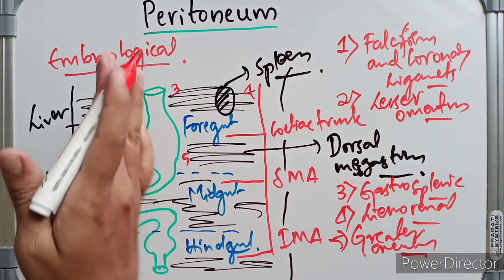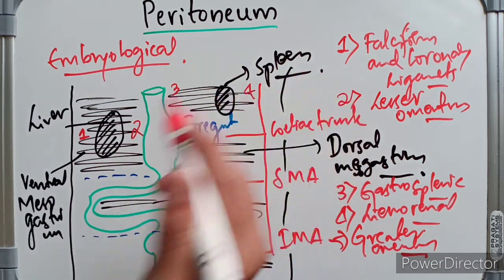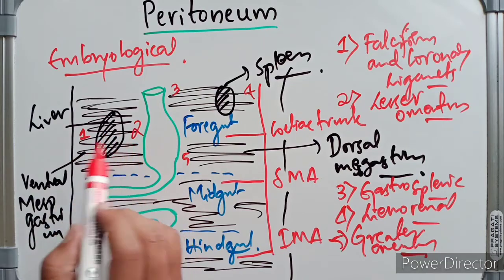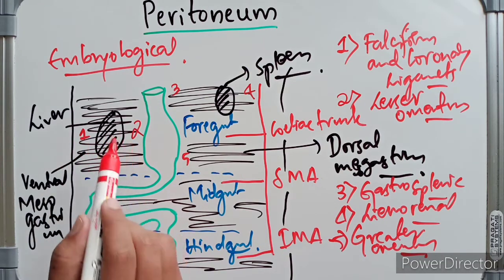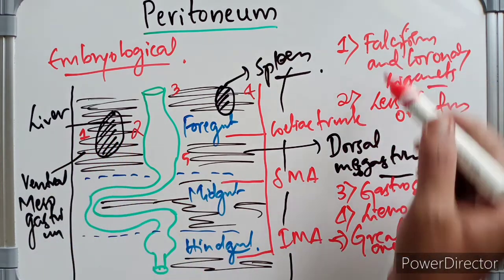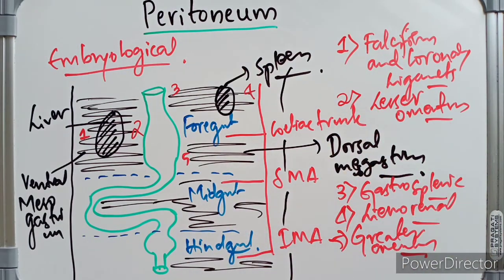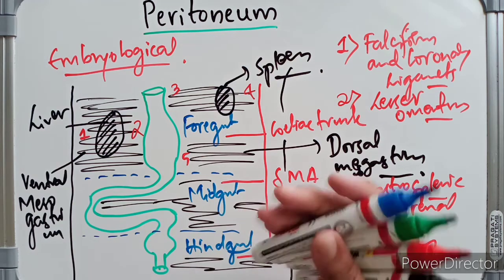This completes the ventral and dorsal mesogastrium analysis and forms the embryological basis for understanding the different peritoneal folds. We will now look at the derivatives of the developing gut in the abdomen.